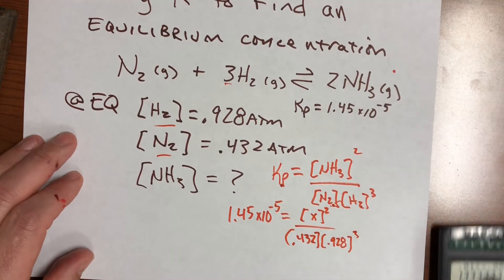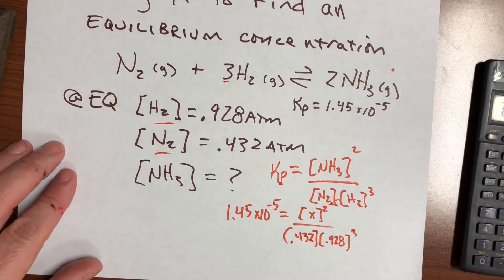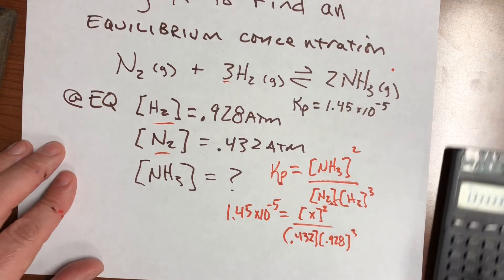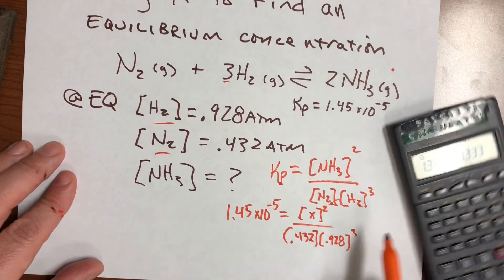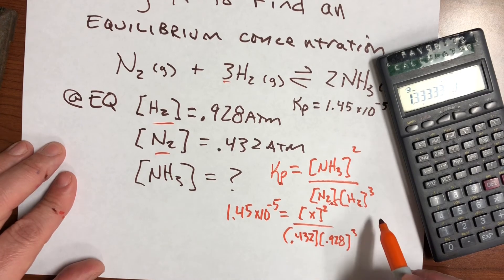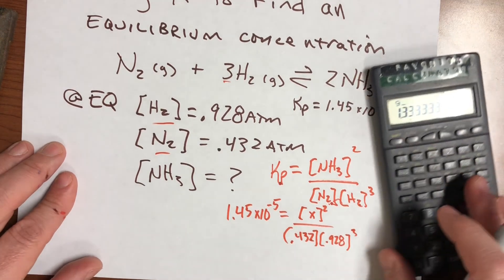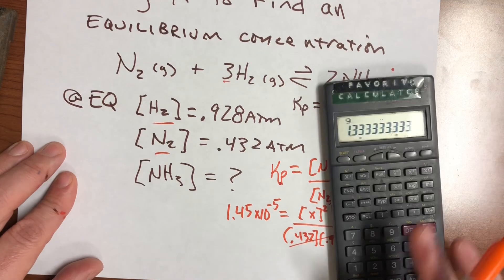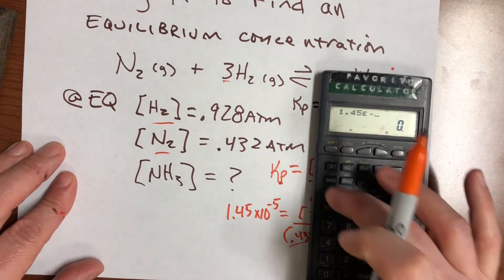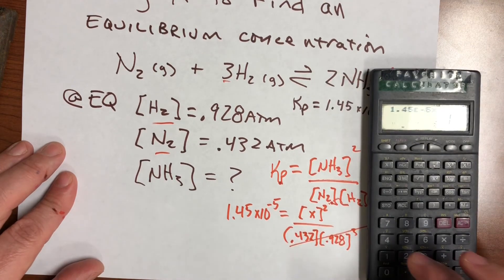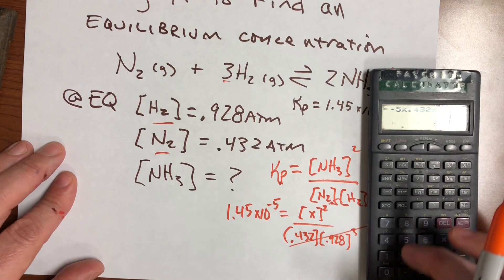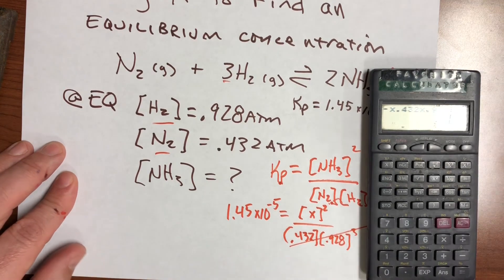And so there it is. We just got to solve for X. So what we're going to do is we're going to first get the X alone by multiplying out this denominator. So we're going to take these numbers, multiply these numbers to the right and to the left. So they're going to cancel out on the left. And on the right, we're going to be left with 1.45 times 10 to the negative 5th times 0.432 times 0.928 cubed. That's going to cube.